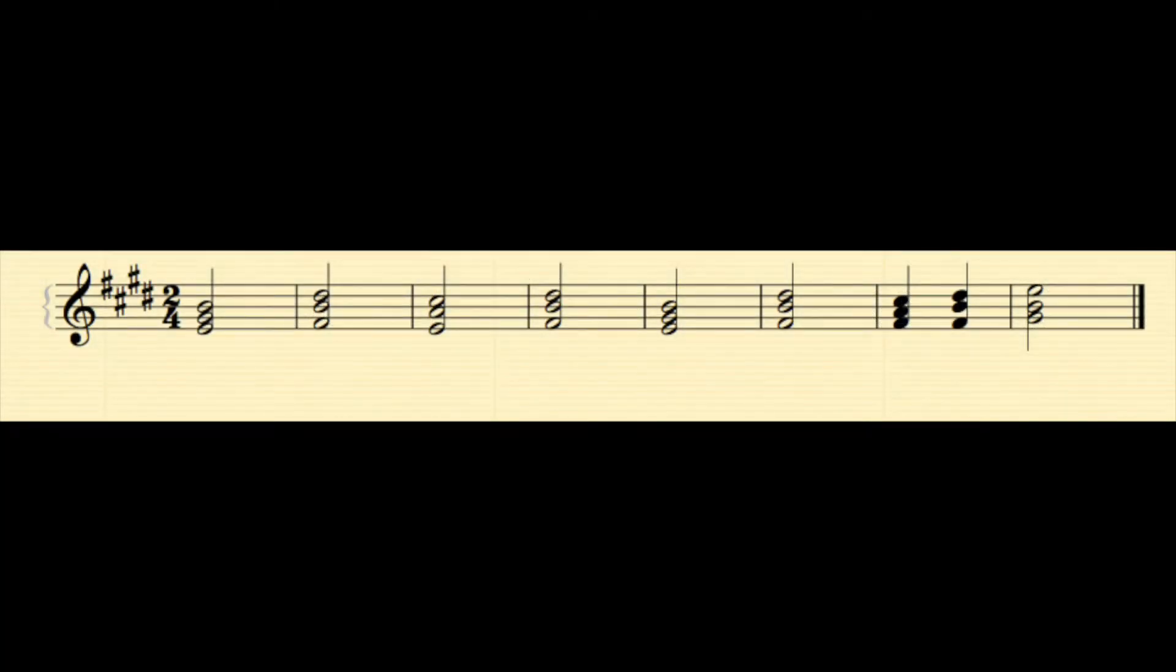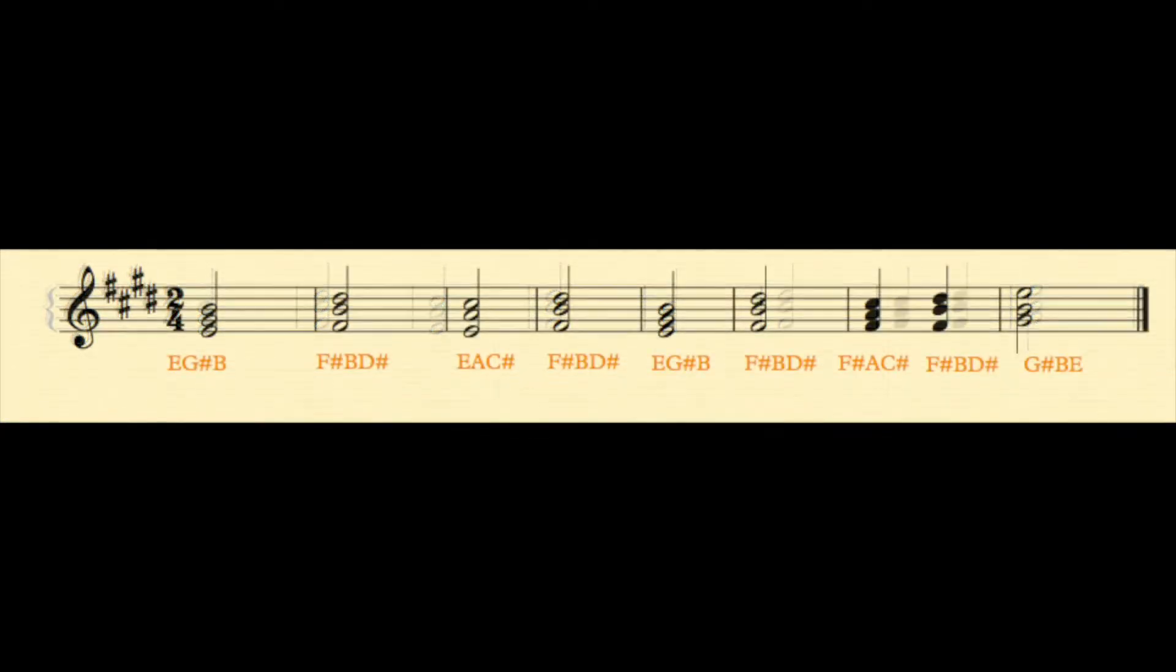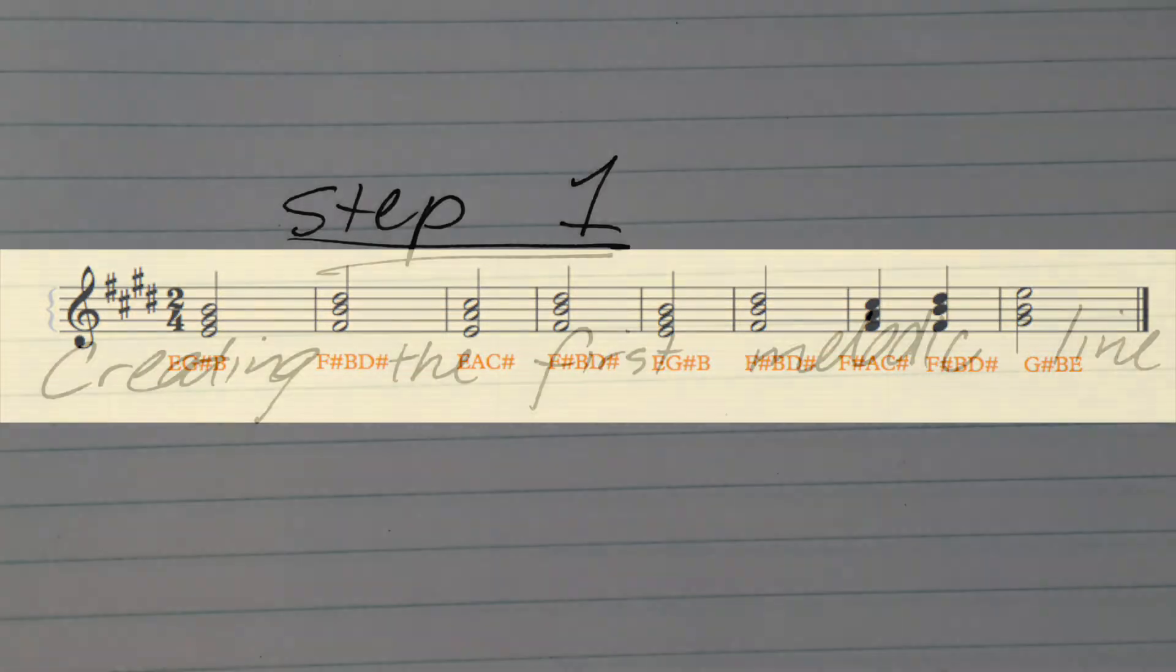So let's get started, and again our starting point will be a simple chord progression. Here is a series of chords in E major. Now because we are effectively creating two melodic lines, we will use the same process we used previously in the melody writing video. To make life easy for ourselves, I have written the names of the chord notes below the staves.